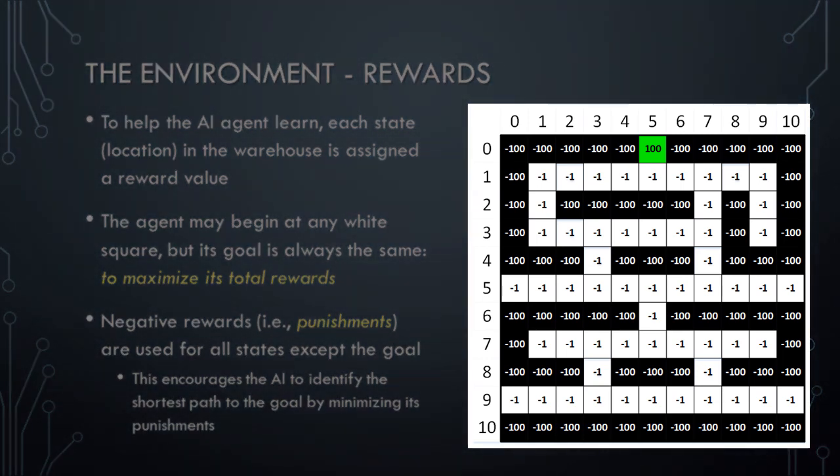You might be wondering why we don't use positive rewards for the white squares. Remember that the AI agent's goal is always to maximize its cumulative rewards. If we were to use positive rewards for the white squares, then the agent could simply drive around on the white squares forever and accumulate a very large cumulative reward, even if it never reaches the goal. By using negative rewards, the agent receives a small punishment for each step that it takes, and so to minimize its punishments, it will try to reach the item shipping location by taking the fewest steps possible, resulting in the shortest path from the current location to the goal.